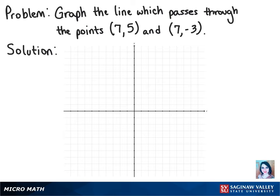Let's graph the line which passes through the points (7, 5) and (7, -3). We're going to move over 7 on the x-axis for both points. For the first coordinate, we have to move up 5 units from there. And for the second coordinate, we have to move down 3 units from there.